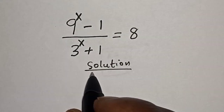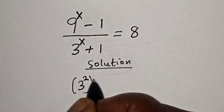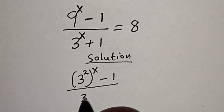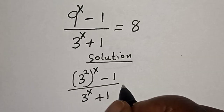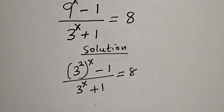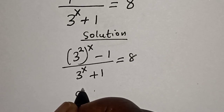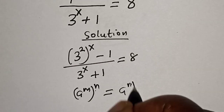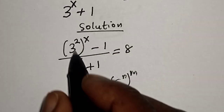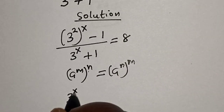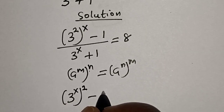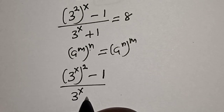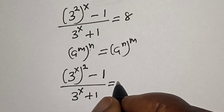9 raised to power x can be written as 3 raised to power 2x. So we have 3 raised to power 2x minus 1 divided by 3 raised to power x plus 1 is equal to 8. Remember the exponential rule that a raised to power m raised to power n is equal to a raised to power mn. This becomes 3 raised to power x squared minus 1 divided by 3 raised to power x plus 1 is equal to 8.